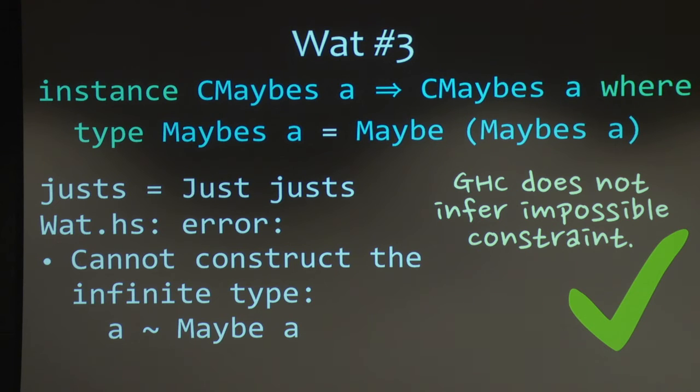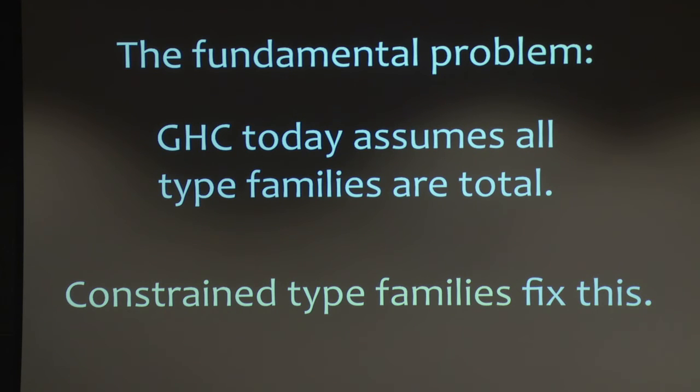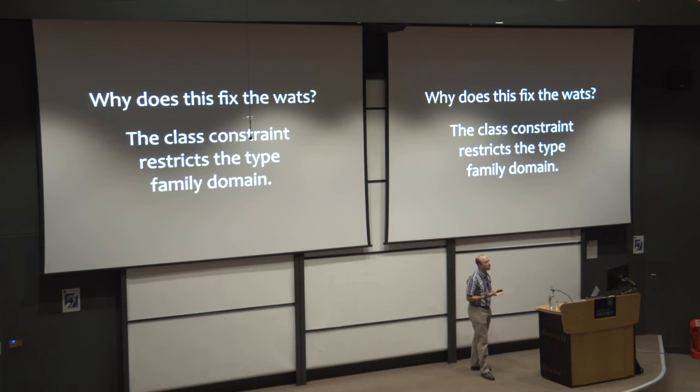So what all these examples all connect with is that GHC is making this implicit assumption of totality. Every time we write a type family in a Haskell program, GHC is assuming that somewhere deep down, there's a type in there. But there isn't, as we've seen. And so having constrained type families fixes this assumption. So why does it fix it? It's because we're now being more honest. By restricting, by having that class constraint, we're effectively restricting the domain of what the function might be called on to the area where it actually is defined. So now there's no assumption. We know that it's defined there because of the class constraint.